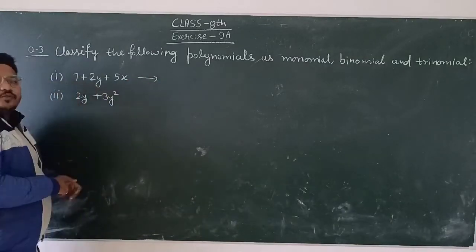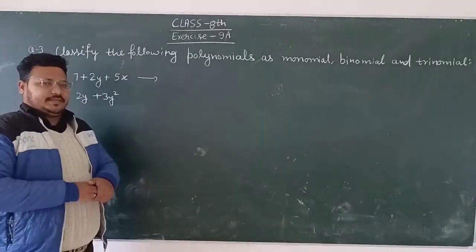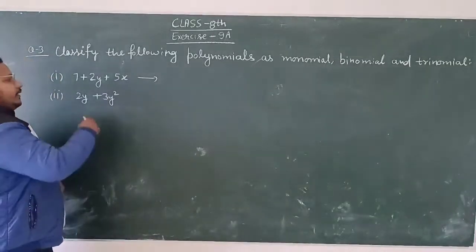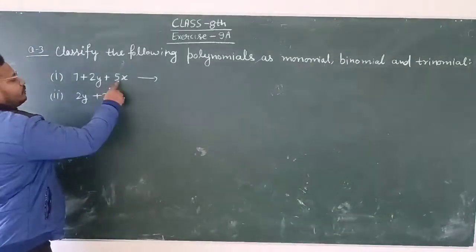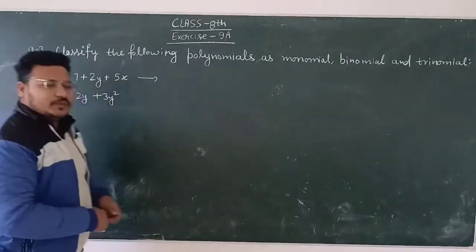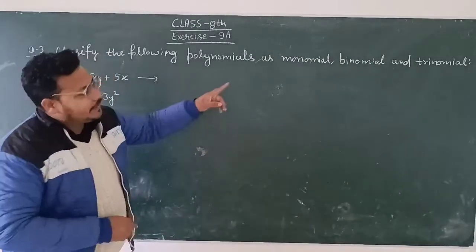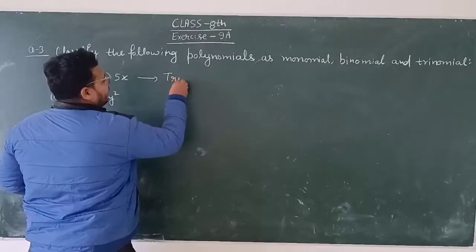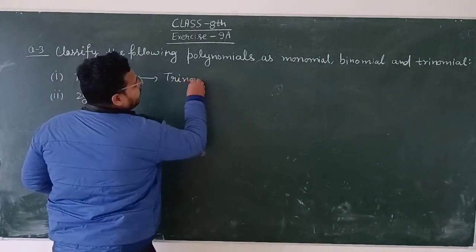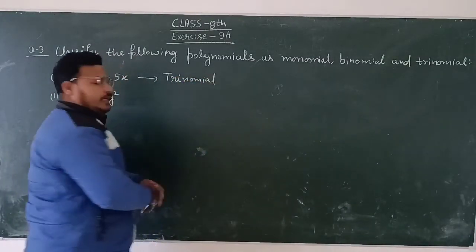So first question 7 plus 2y plus 5x. Clear. So we are seeing the 3 term of 1, 2 and 3. So what is the part of following? Trinomial polynomial. So like a trinomial. Clear, trinomial.